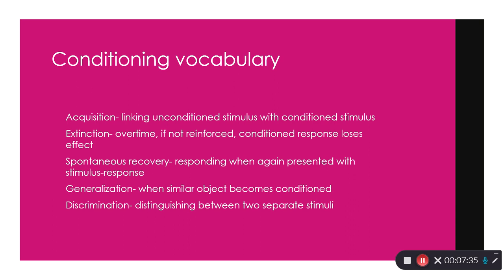Discrimination is the ability to tell between stimuli. For example, if I play the key of G on a piano and give the dog food repeatedly, it'll salivate at G. However, if I play F, the dog will learn over time that F doesn't sound like the G that gets it food. The dog learns to discriminate between G and other notes like E and F on a piano.